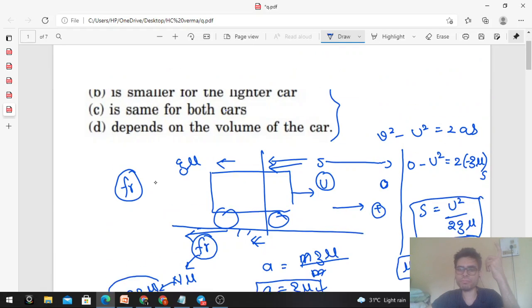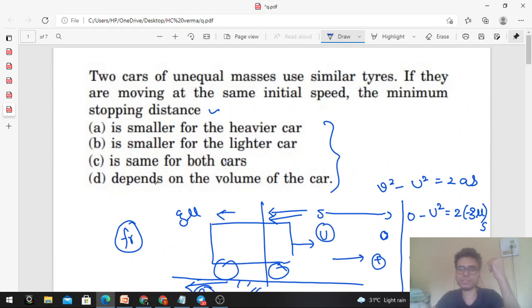On which factor does it depend? μ and initial velocity. So if μ and initial velocity are same - similar tires are given, and if tires are similar then coefficient of friction will be same. Same tire and same road, between two surfaces μ will remain constant. Moving at the same initial speed, so u is also same.